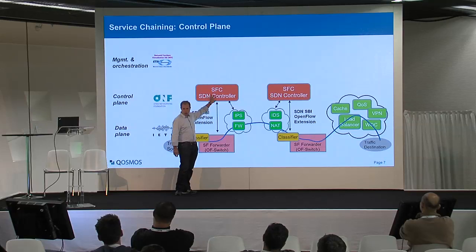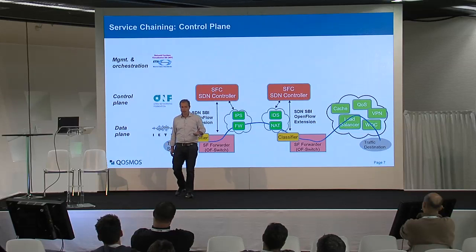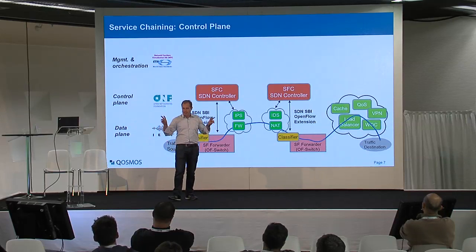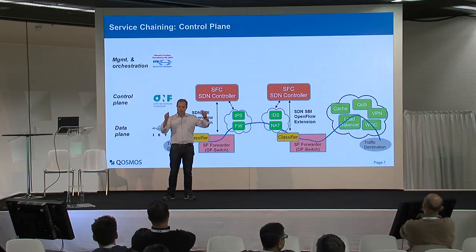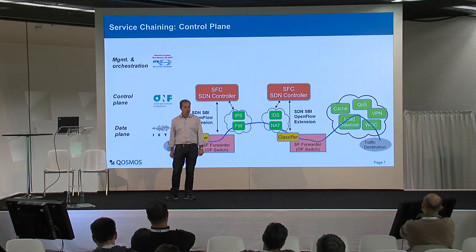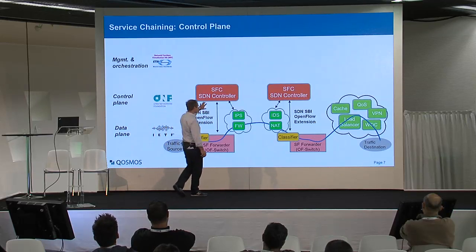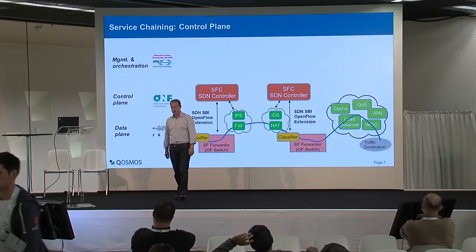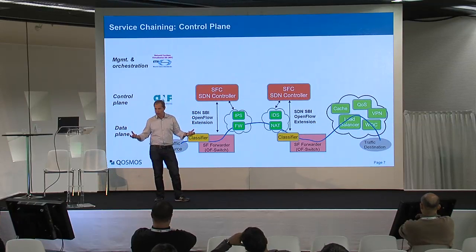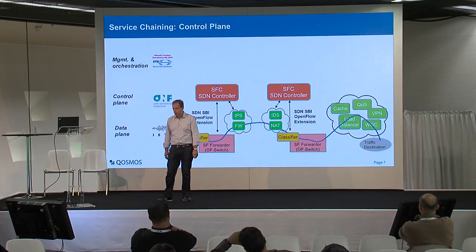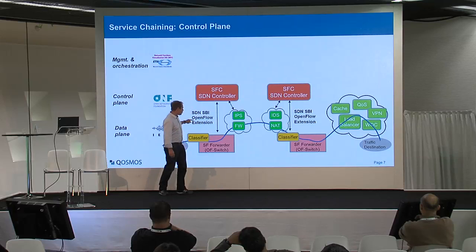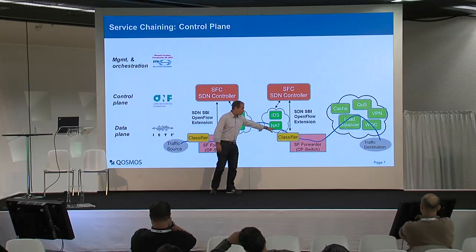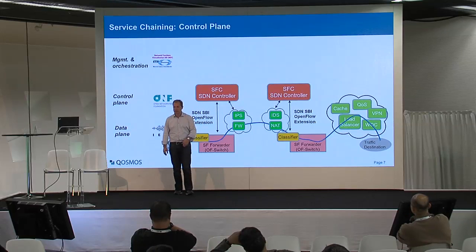You have an SDN controller, and one application that could be designed on top is an SFC controller — SFC for service function chaining. You have REST APIs where you can say: if I see HTTP, I want this chain; if I see audio, I want this chain. An application sitting north of this infrastructure can configure the underlying infrastructure using a regular SDN controller, which then uses OpenFlow extensions to populate the physical or virtual infrastructure using OpenFlow or OpFlex-like protocols.